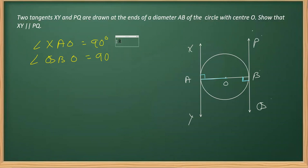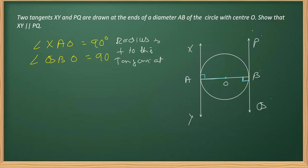The reason for both angles being 90 degrees is that the radius is perpendicular to the tangent at the point of contact. So we write this as our reason: radius is perpendicular to the tangent at the point of contact.